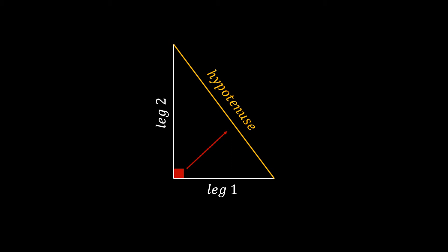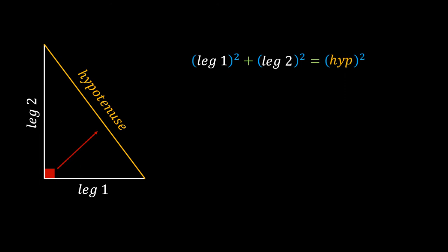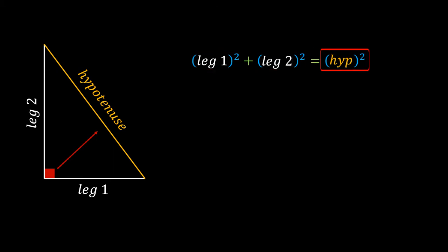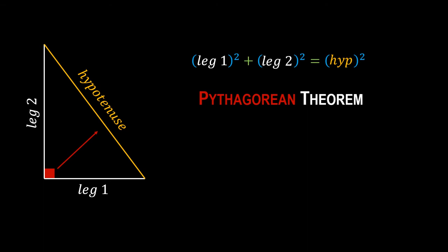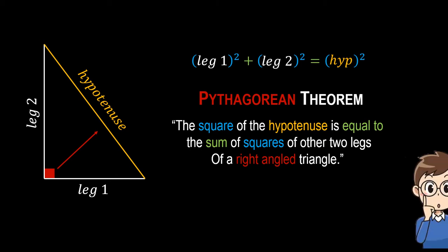The three sides of a right triangle have a very beautiful relationship with each other. That relationship says: if you square the two legs and add them up, they will be equal to the square of the hypotenuse. This is known as the Pythagorean theorem, which formally states that the square of the hypotenuse is equal to the sum of the squares of the other two legs of a right-angled triangle.